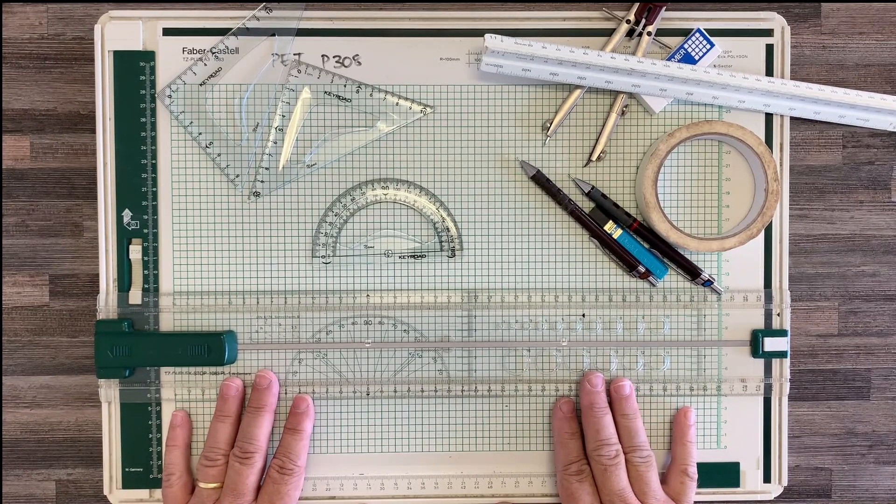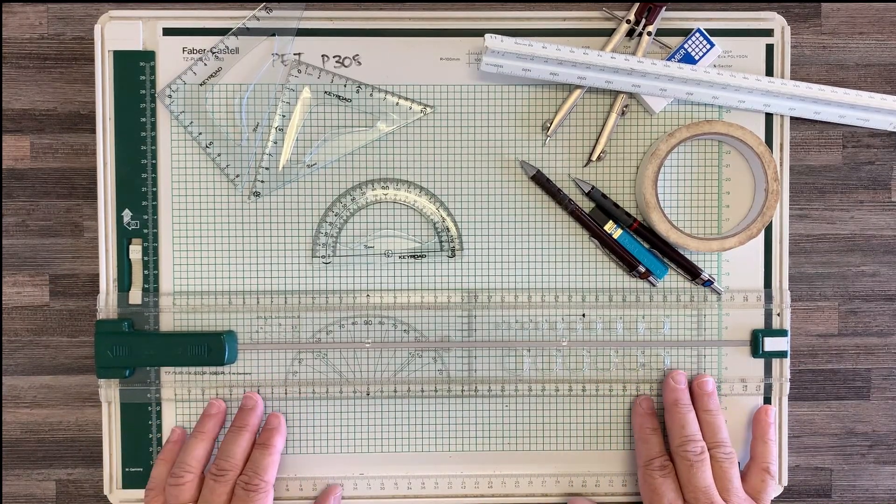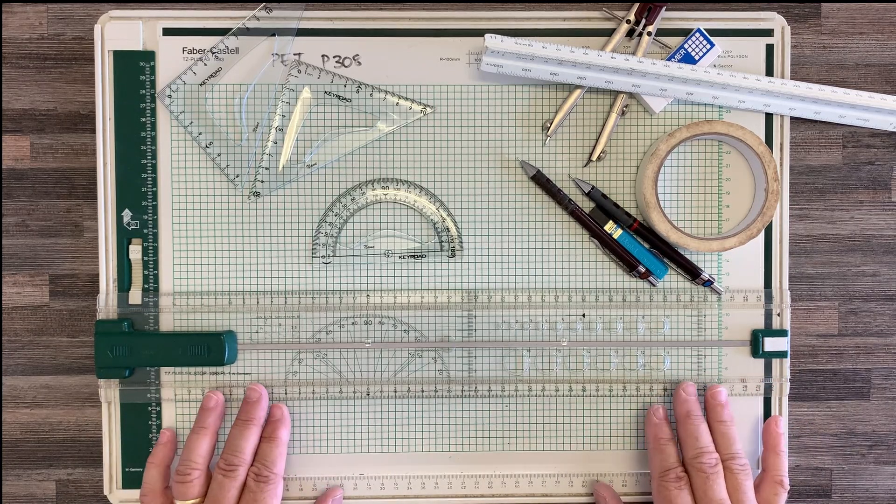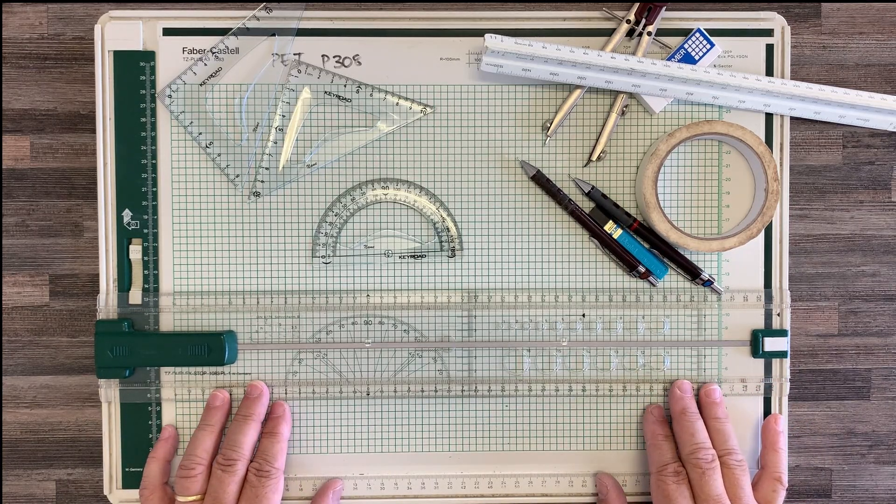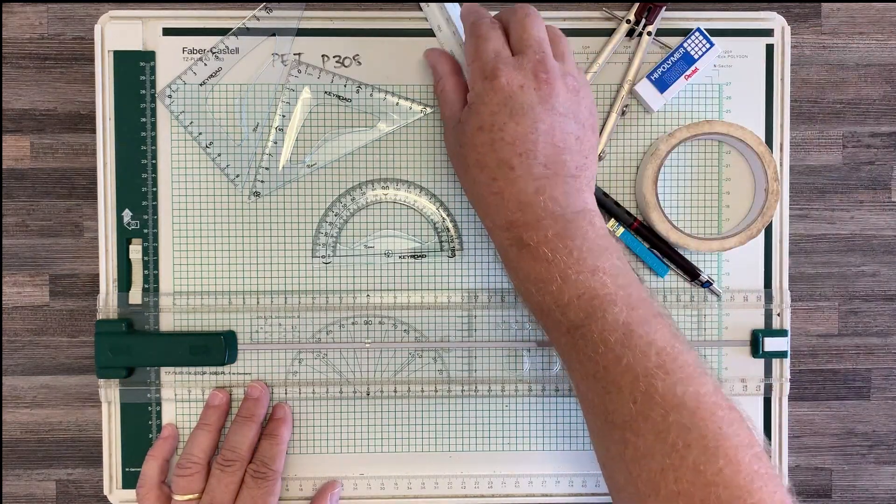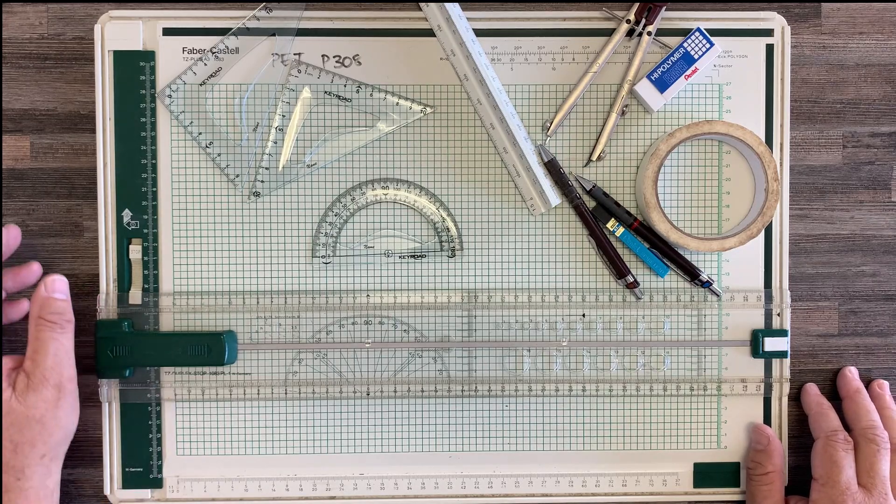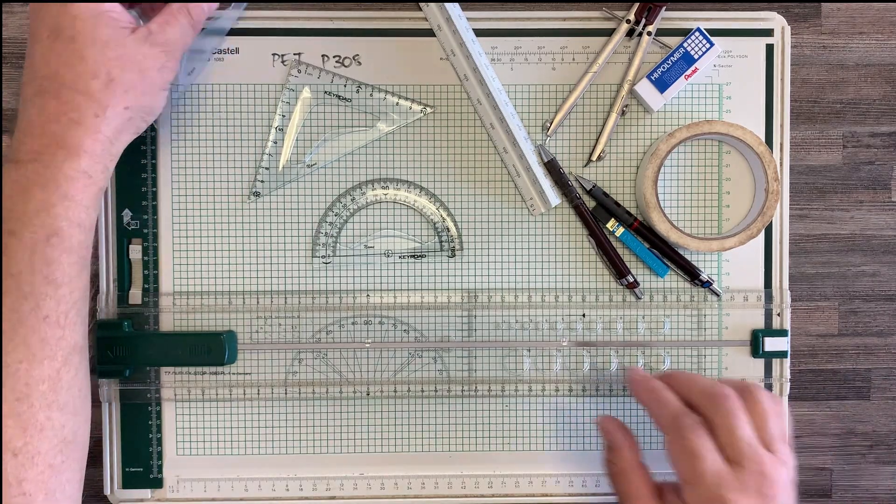So a drawing board like this is very useful. If you're not able to get hold of one because of lockdown or COVID, then it is possible to get by just with rulers and with set squares. So the next item that's very important is a set of set squares.